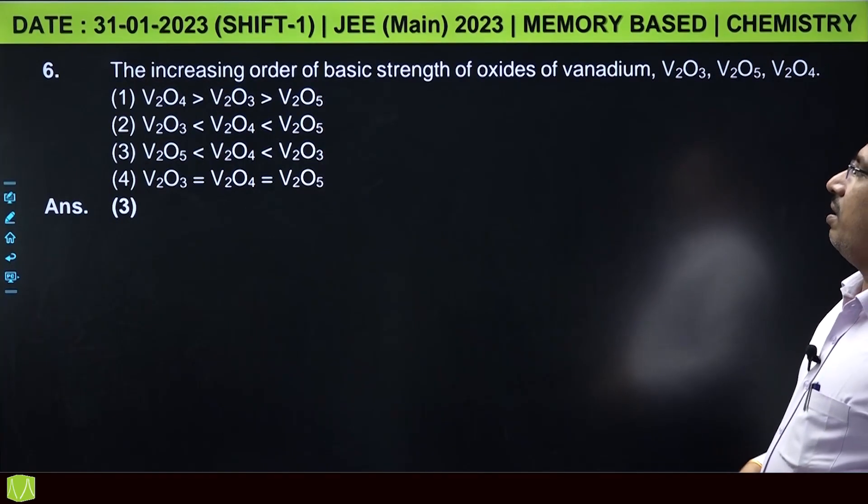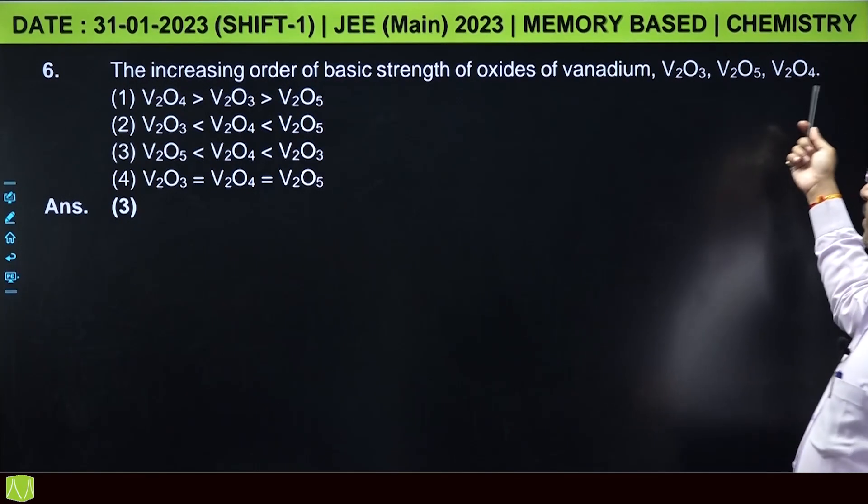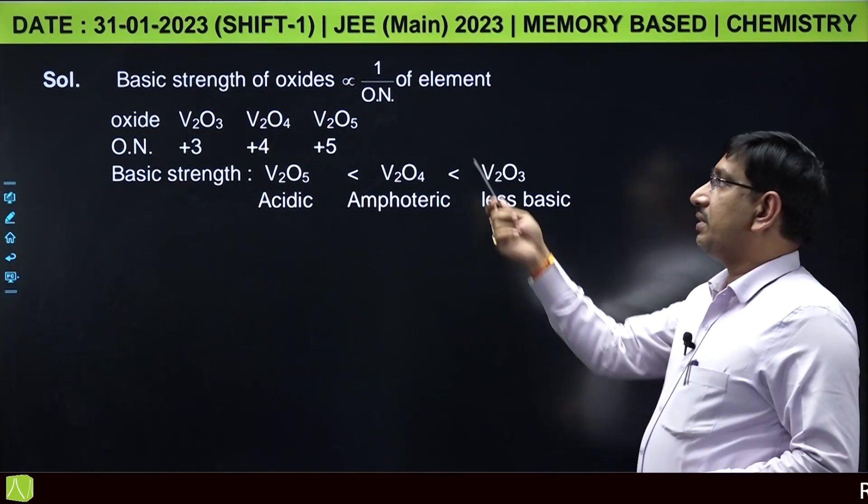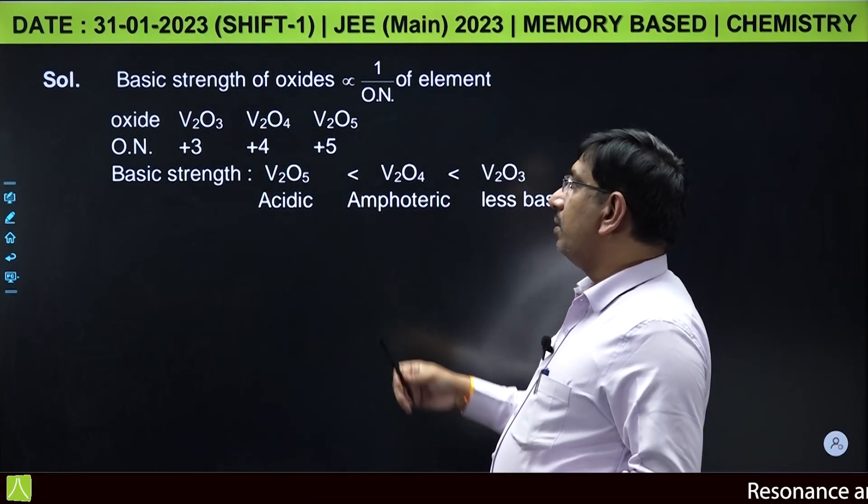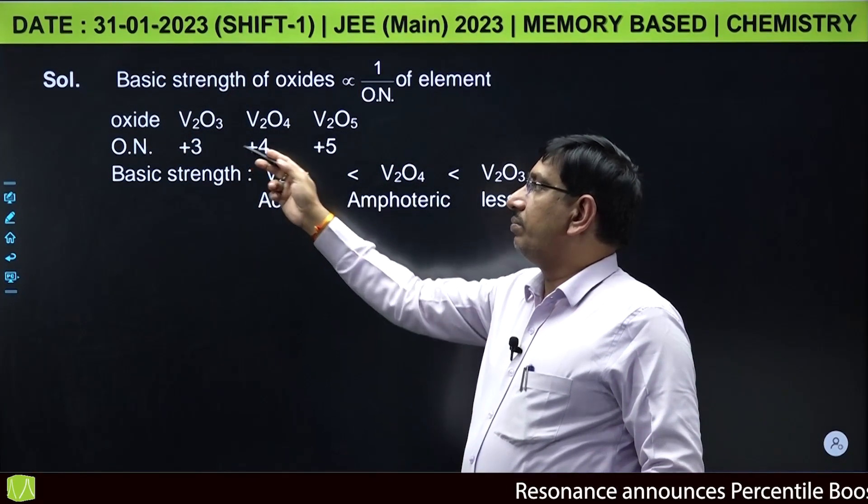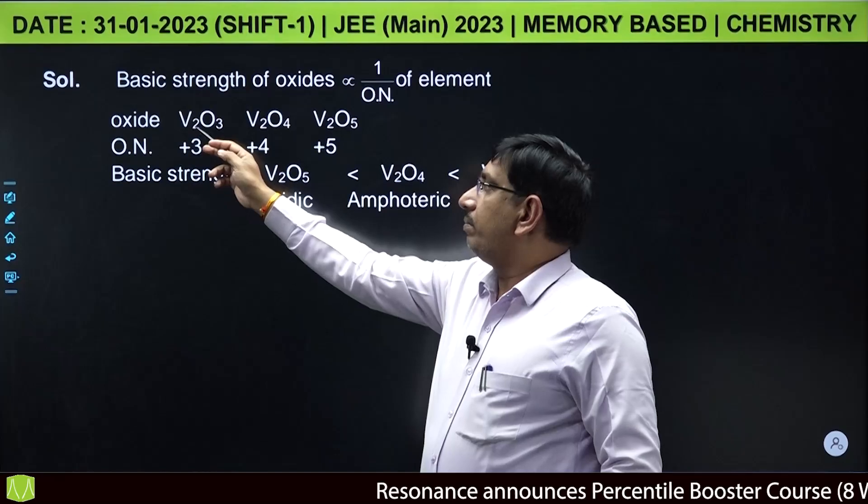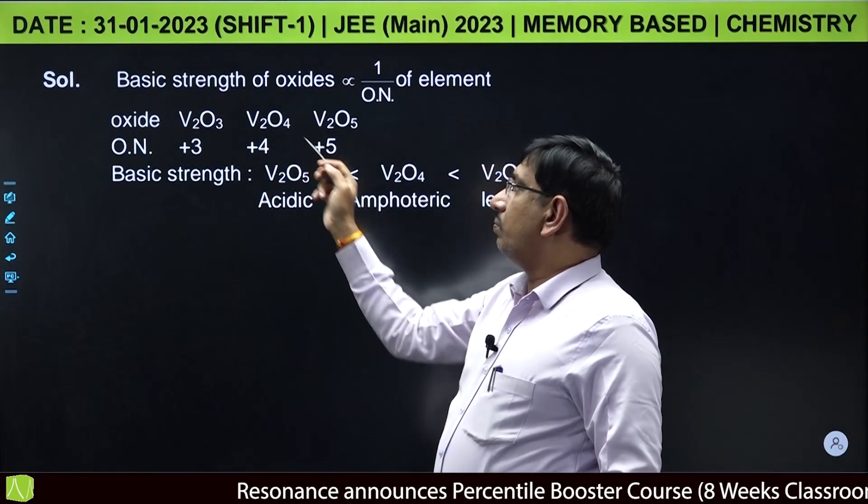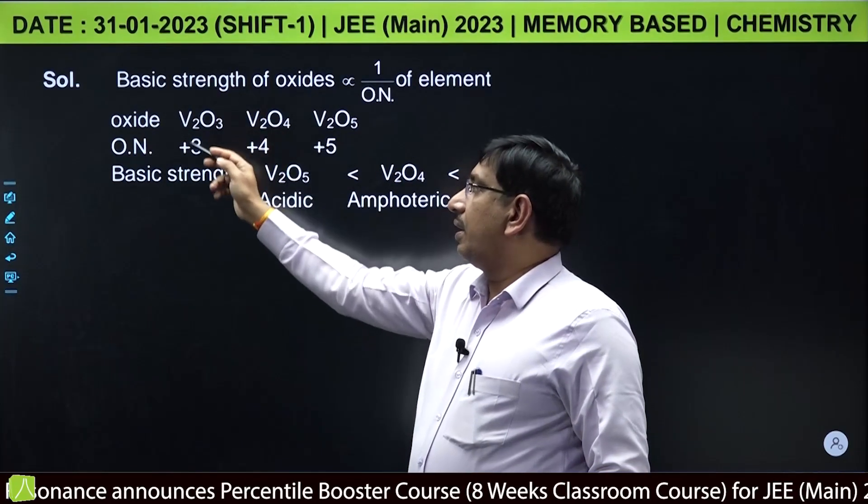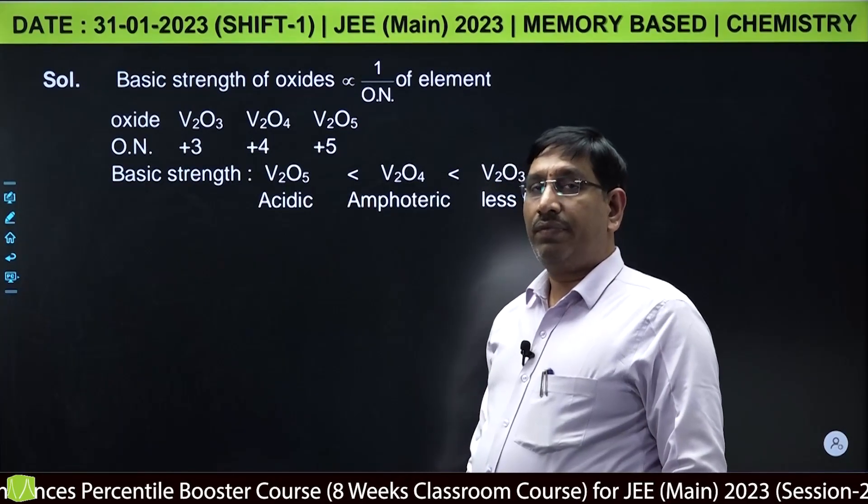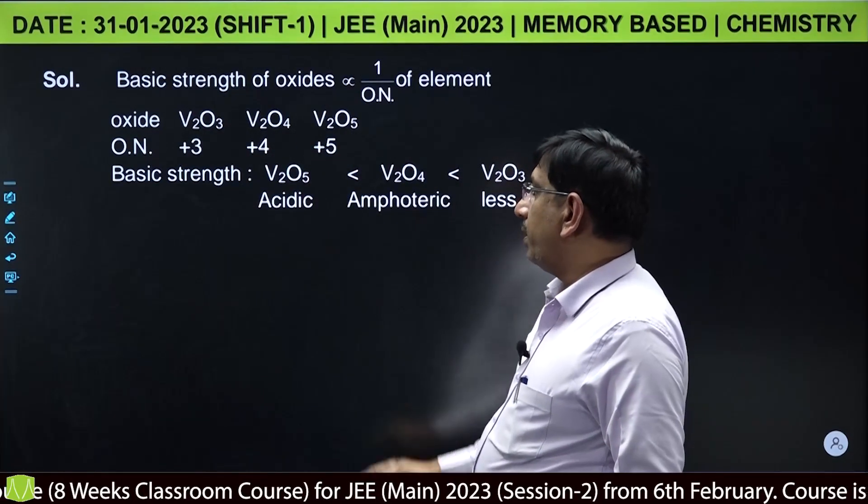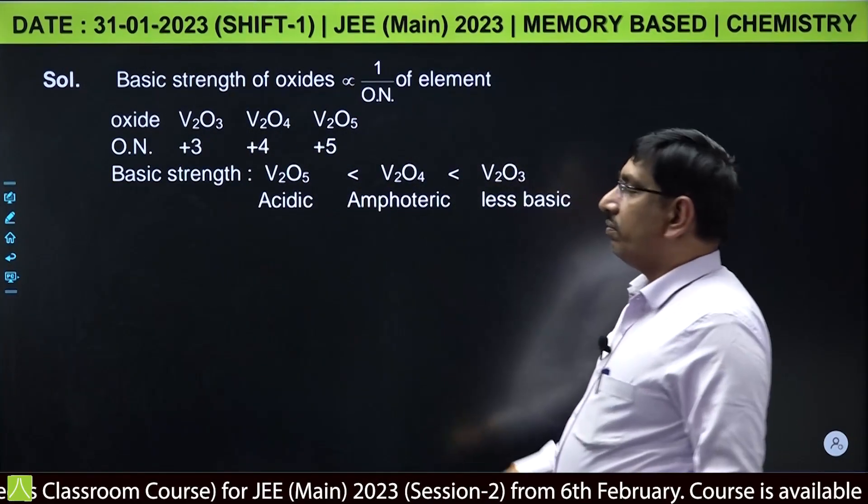The increasing order of basic strength of oxides of vanadium: V2O3, V2O5, V2O4 are given. In this, basic strength of oxides is inversely proportional to oxidation number of the element. Here oxides V2O3, V2O4, V2O5, oxidation number of vanadium if you observe it is plus 3 in V2O3, plus 4 in V2O4, and plus 5 in V2O5. So among these, the less oxidation number is for V2O3, so it is more basic than V2O4 than V2O5. So this is the increasing order of basic strength.